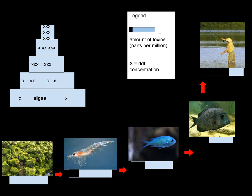Biomagnification, also known as bioamplification or biological magnification, is the increasing concentration of a substance, such as a toxic chemical, in the tissues of tolerant organisms at successively higher levels in a food chain.